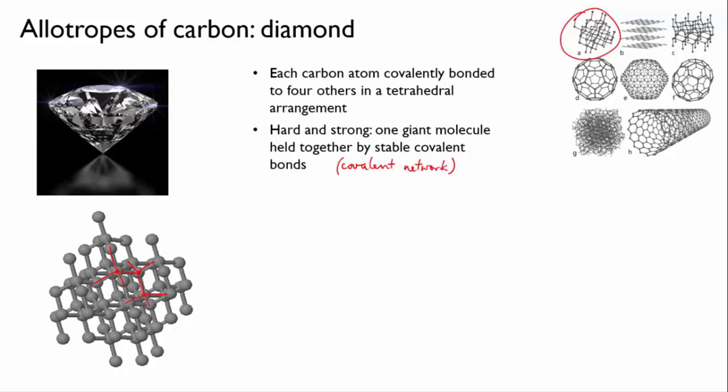Like most covalent compounds, diamond doesn't conduct electricity, because the electron pairs are confined within the covalent bonds and they can't move through the compound. Recall the difference with conductive metals, which have the delocalized valence electrons that can move through the lattice of positive metal ions, and thus conduct electricity.